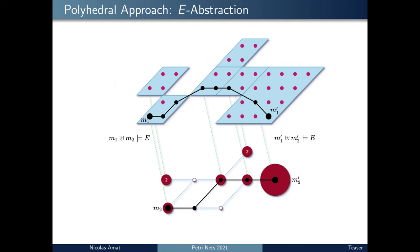One of the contributions of this paper is a new notion of abstraction and equivalence that we call the E abstraction equivalence. Its goal is to capture an equivalence between the reachable markings of the initial net and the one of the reduced net modulo our linear system E.